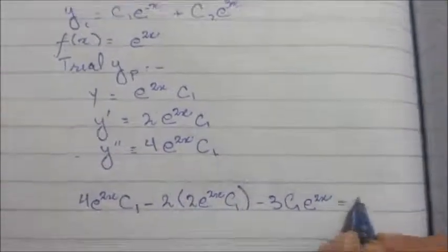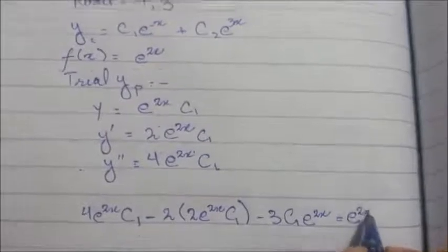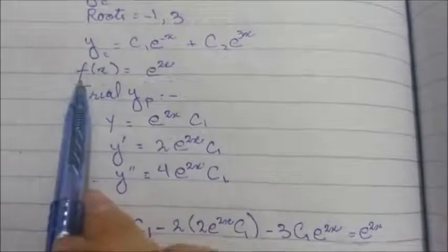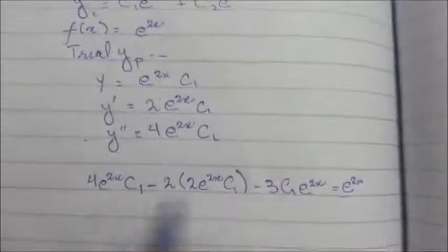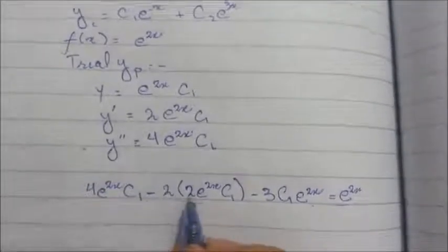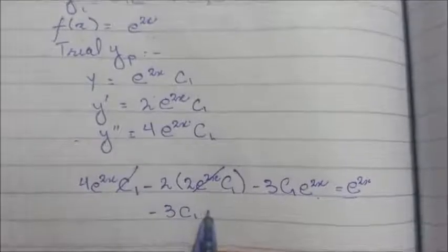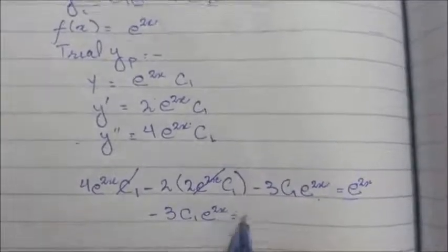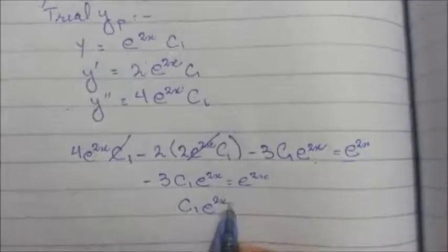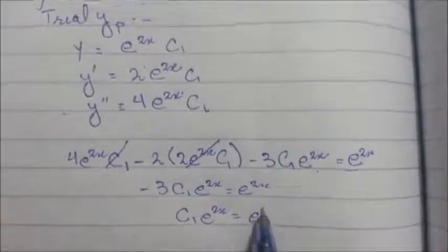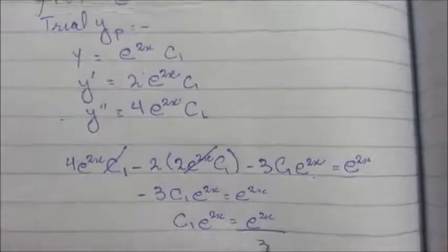e^x is basically the function f(x). After solving this, 2 to the power 2, both will be cancelled. 3c1e^x is equal to e^x. c1e^(2x) is equal to e^(2x) upon 3 by minus 1.